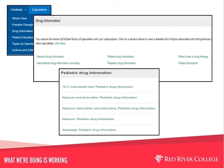Selecting drug information from the contents menu gives you access to the entire UpToDate drug library. Click on a selection to view a detailed list of topics associated with that particular section. General drug information retrieves an alphabetical list of drugs, and each will provide brand names, dosing, administration, interactions, and more. Click on patient drug information to see a similar alphabetical list of drugs with information aimed at patient education, including brand names, warnings, usage, and more. Other options include international drug information, pediatric drug information, and what's new in drug therapy.